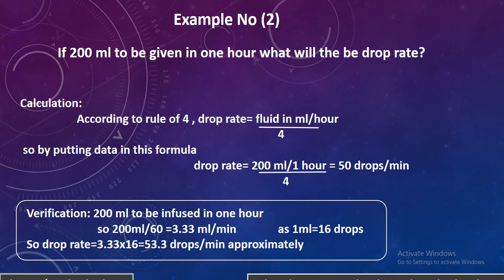Now, coming towards another example. If 200 mL is to be given in one hour, what will be the drop rate? According to the Rule of 4, drop rate equals fluid in mL per hour divided by 4. Putting in the data: 200 mL divided by 1 hour divided by 4, it comes out to be 50 drops per minute.